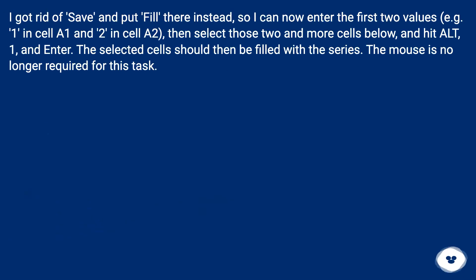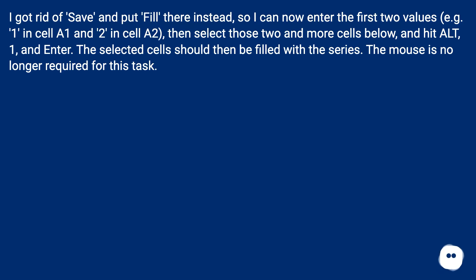I put Fill where Save used to be, so I can enter the first two values — e.g., 1 in cell A1 and 2 in cell A2 — then select those two cells and more cells below, and hit Alt, 1, Enter. The selected cells will then be filled with the series. The mouse is no longer required for this task.